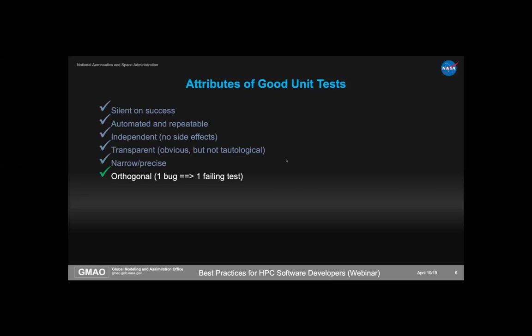We want tests to be orthogonal — ideally, one bug in the code causes only one test to fail. Tests should be small and frugal. We get used to declaring physically realistic scenarios with large arrays, but in reality we want tests to run very quickly. The unit testing community ideal is that unit tests should run in a millisecond. The challenge is: how small can you make the array and still have a valid test? Usually two-by-two or three-by-three is sufficient.